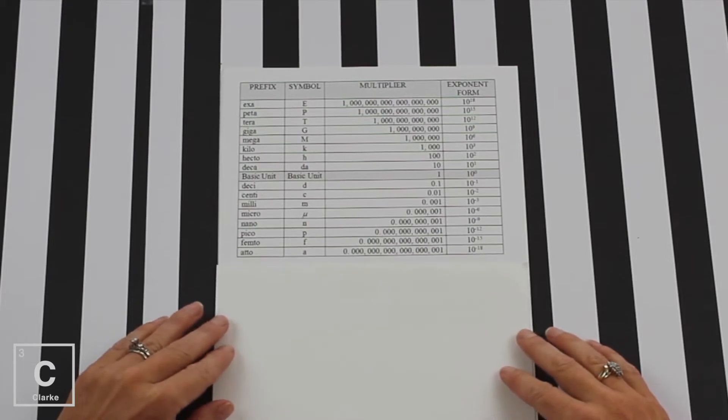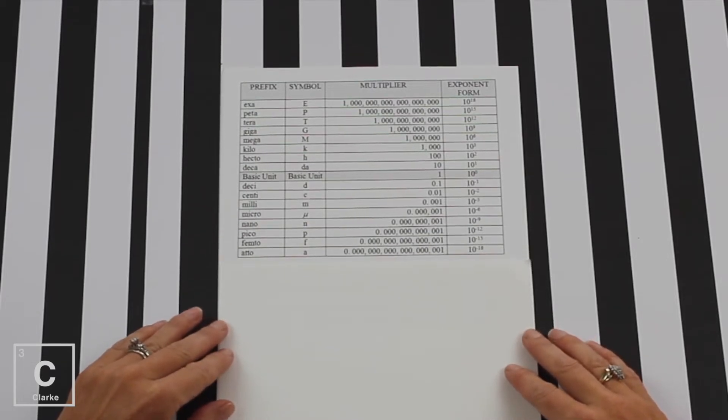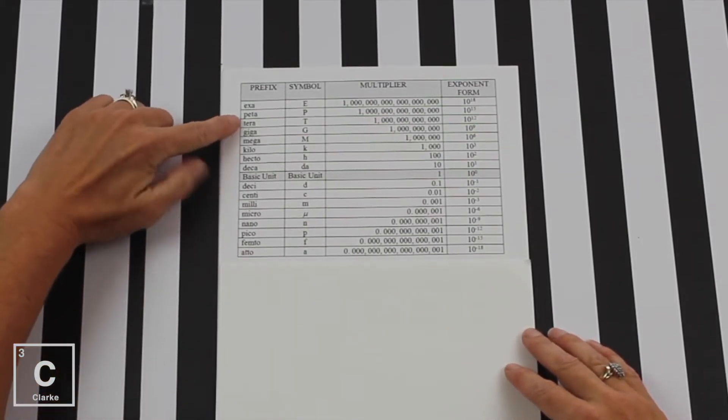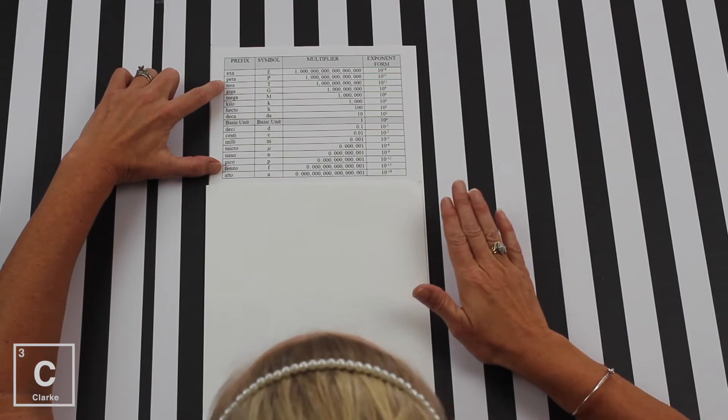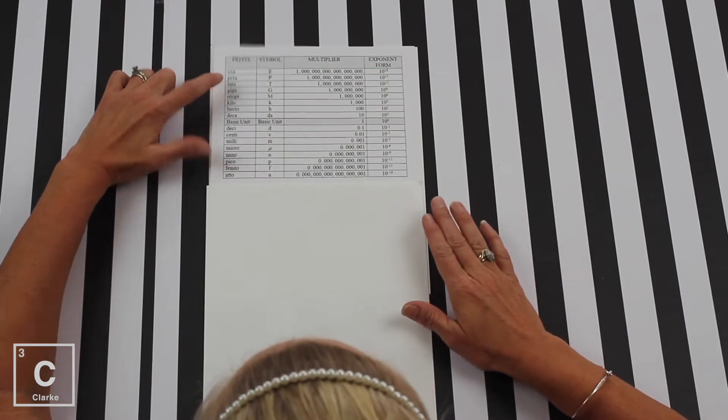It has all of our metric prefixes on it. I make my students learn from terra to femto. That's practically the whole chart. That's what I teach. So it's really whatever your teacher is telling you. But let's notice this base unit right here in the middle. Your base unit, that's like meter, liter, gram, second. There's no prefix. It's just the word. That's the base unit.